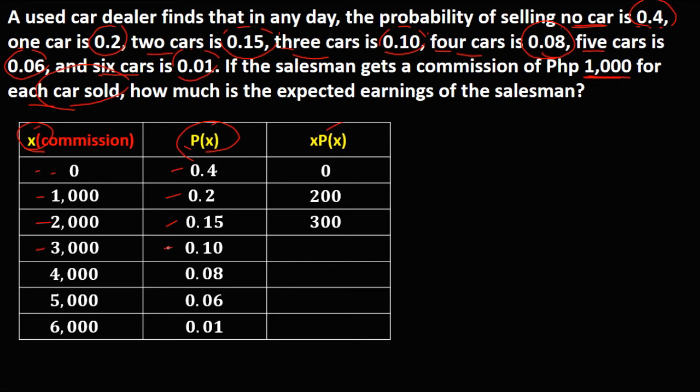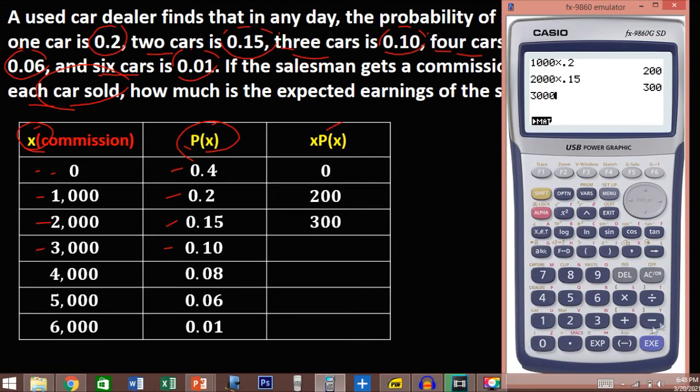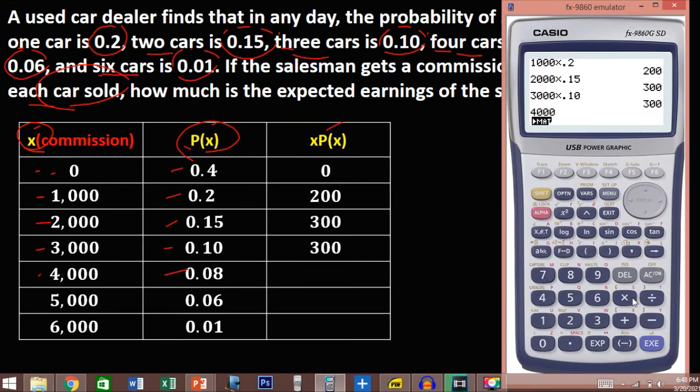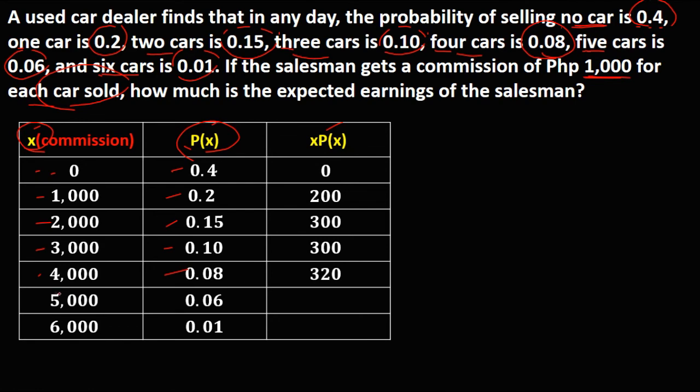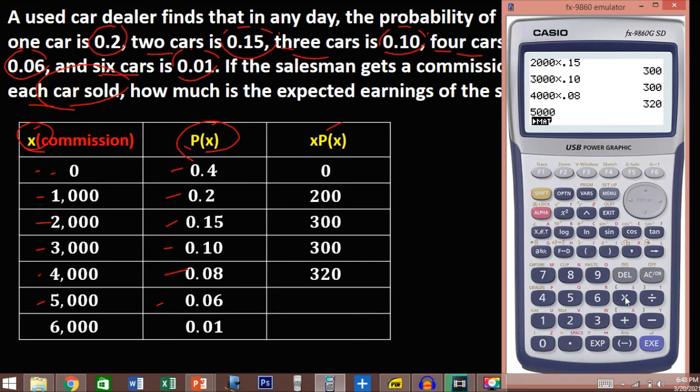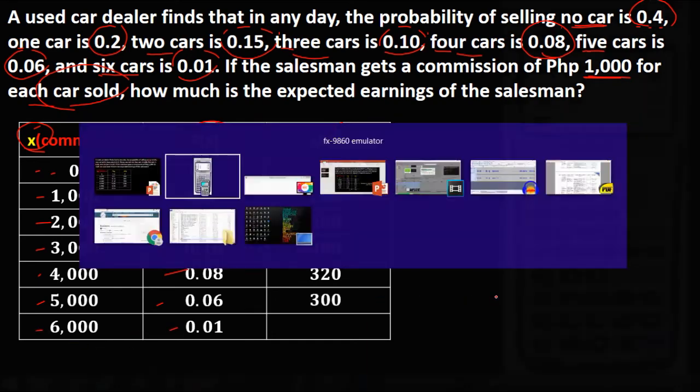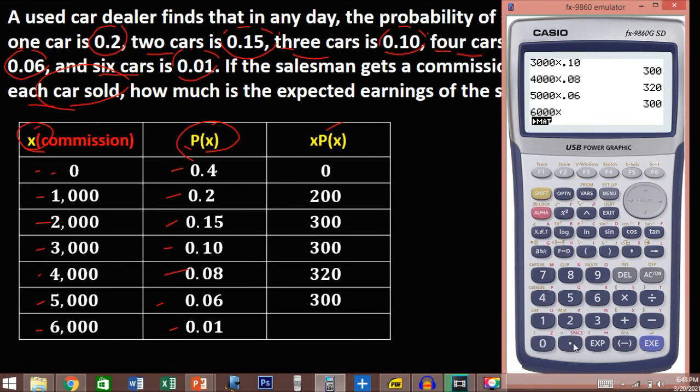3,000 times 0.10, that's 300, 4,000 times 0.08, that's 320, 5,000 times 0.06, that's 300, then the last one, 6,000 times 0.01, that's 60.